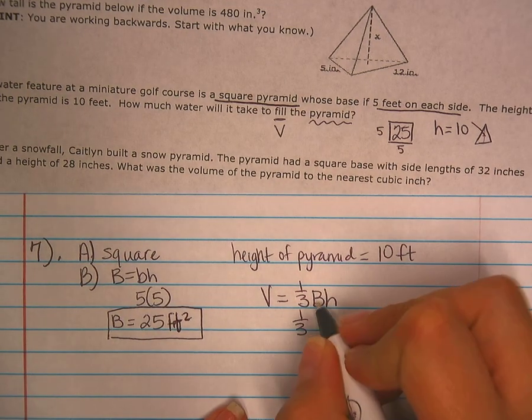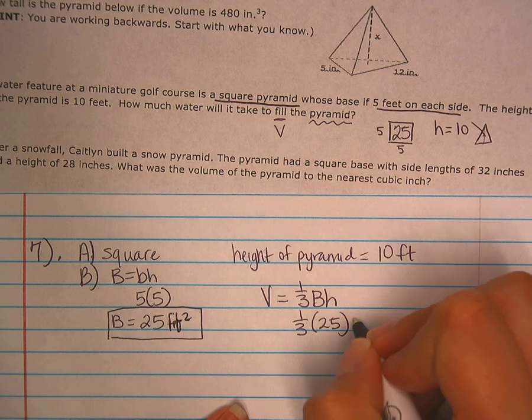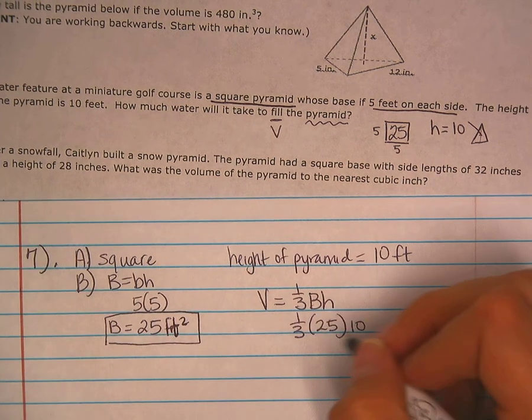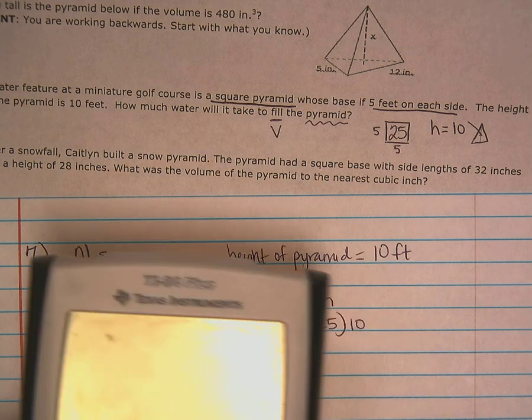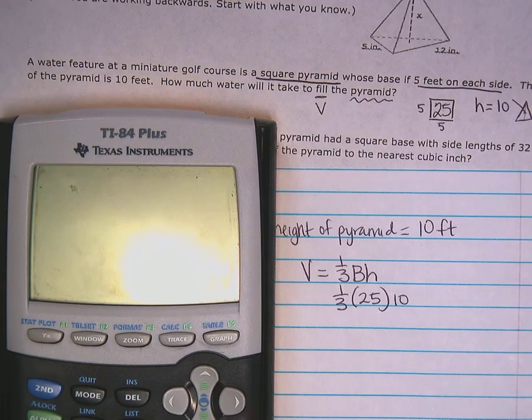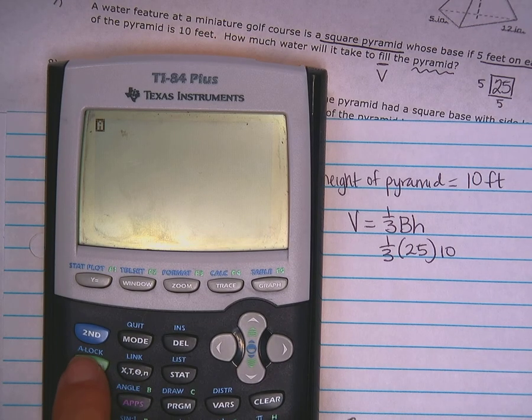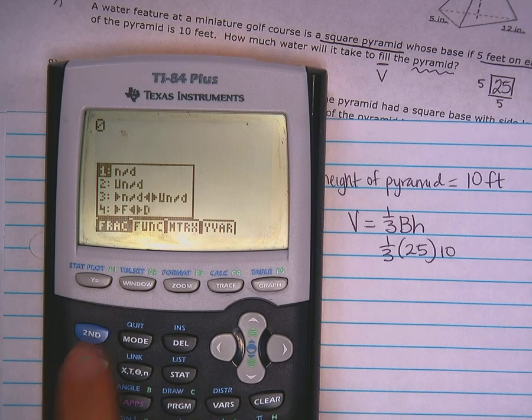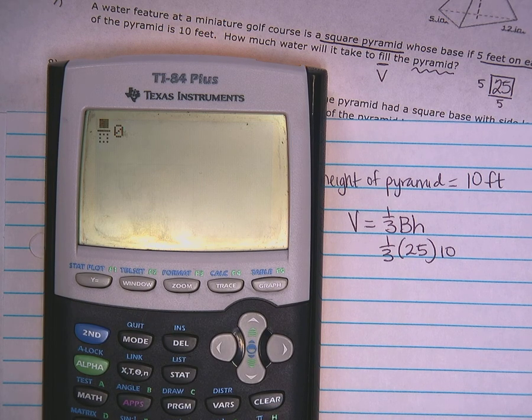Let's plug in. Big B, we said was 25. Height, we said was 10. So none of these is easily divided by 3. So you guys are using calculators. So easily I'm just going to say, well, let's just do it all together. Remember, if you forgot alpha, which is the green button, Y equals, gives me my fraction button. So I'm going to go ahead and use that. Pick the first one.